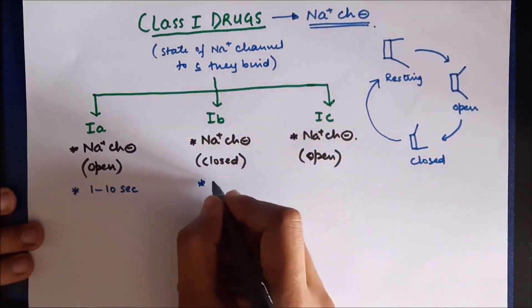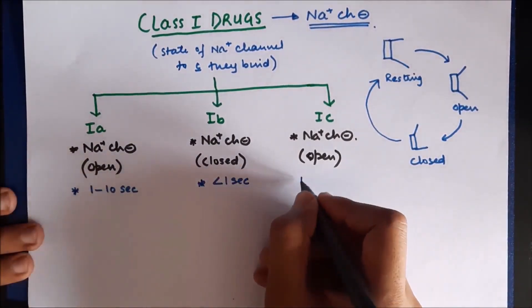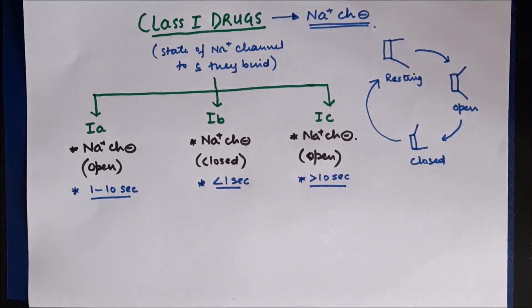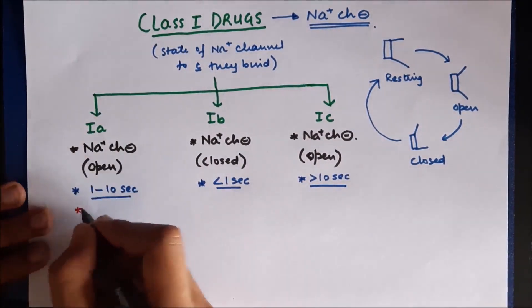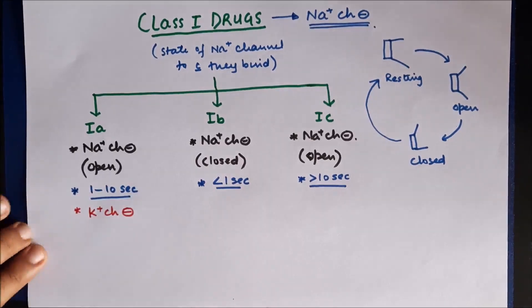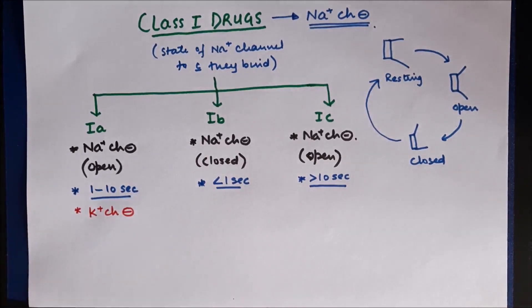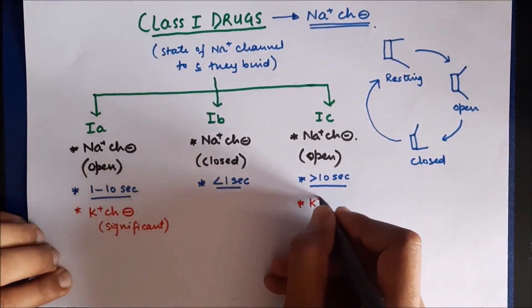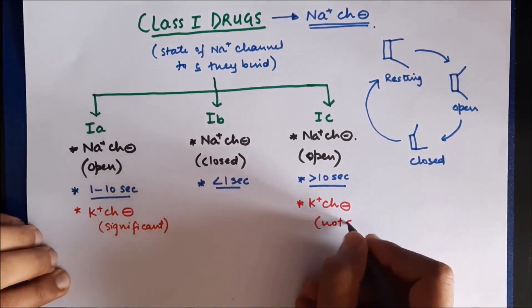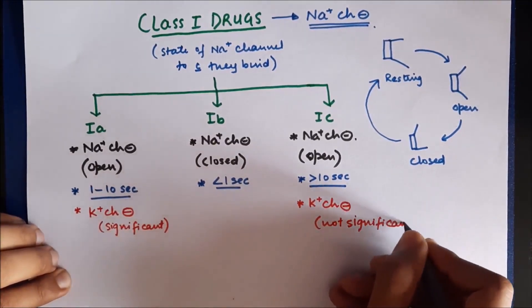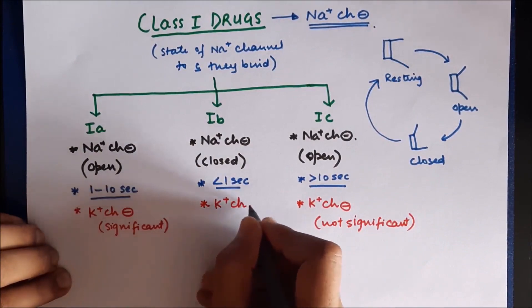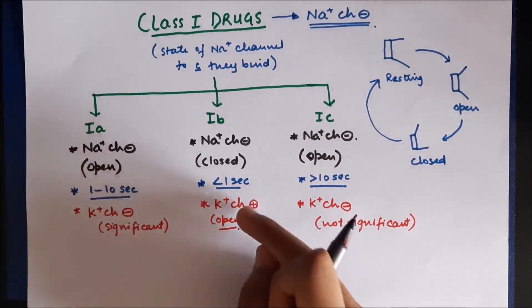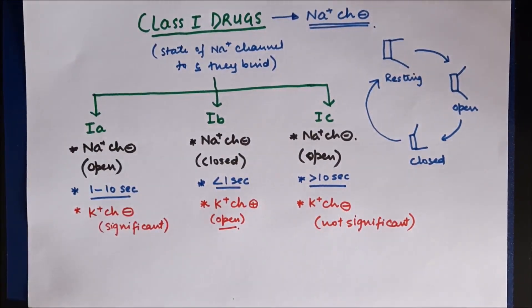There is also a difference in the duration for which sodium channels are blocked. Class 1a drugs block sodium channels for 1 to 2 seconds, Class 1b for less than 1 second, and Class 1c for more than 10 seconds — meaning Class 1c drugs have the maximum blockade duration and maximum arrhythmogenic potential. Regarding potassium channels: Class 1a drugs significantly block potassium channels, Class 1c drugs also block potassium channels but insignificantly, while Class 1b drugs open potassium channels, causing early repolarization.